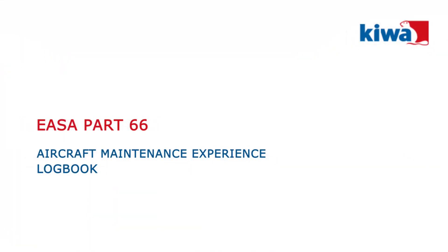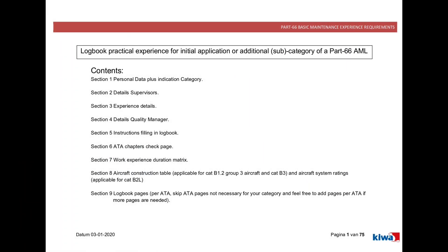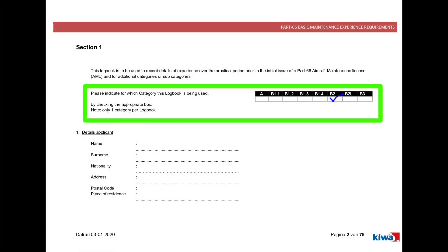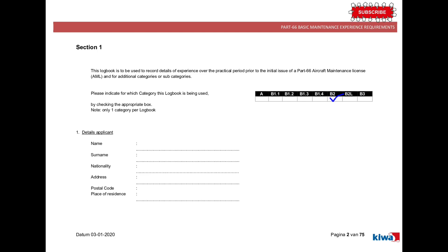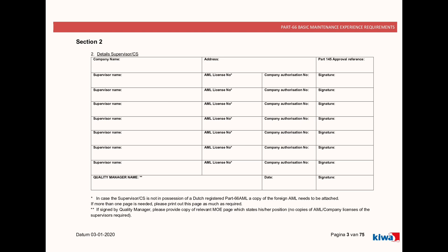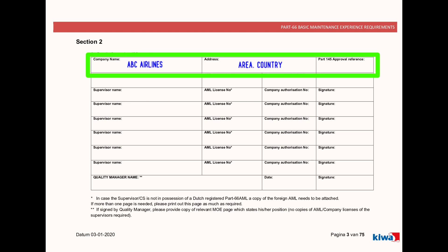The first page of the KIWA logbook shows all the contents — we will see each page in detail. Here you will select the category for which this logbook is used. Please note that one category per logbook is required. Here you will write all your personal details, your company name, company address, and Part 145 approval reference if your company is approved under Part 145 YASA.